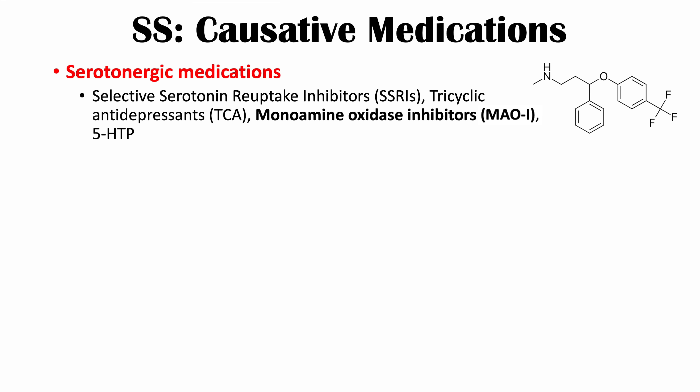The main causes of this condition are serotonergic antidepressants, including the selective serotonin reuptake inhibitors or SSRIs, tricyclic antidepressants or TCAs, and monoamine oxidase inhibitors or MAOIs, which carry some of the highest risk of causing serotonin syndrome but are not commonly used nowadays. 5-HTP can also cause serotonin syndrome.